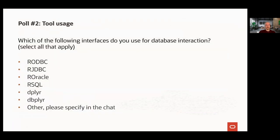For our second poll, let's find out which of the following interfaces you might be using today for database interaction: RODBC and RJDBC, ROracle, RSQL, dplyr, dbplyr. We're coming in at about 75% leveraging ROracle, followed by RODBC, and then dbplyr and dplyr. If you have other systems or tools you're using, please put it in the chat.